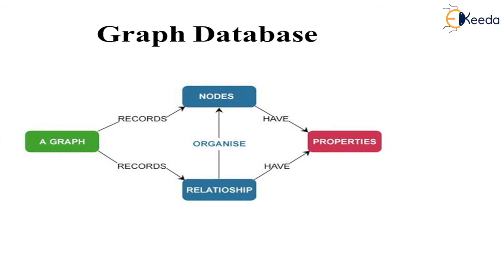Graph databases are designed for data whose relations can be represented as a graph. They store information about networks, such as social connections. Examples include HyperGraph and Neo4j.